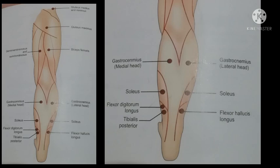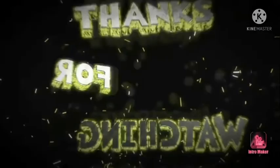To stimulate tibialis posterior, the pan electrode should be on the posterior surface just above the ankle. The action of tibialis posterior is plantar flexion and inversion of foot.